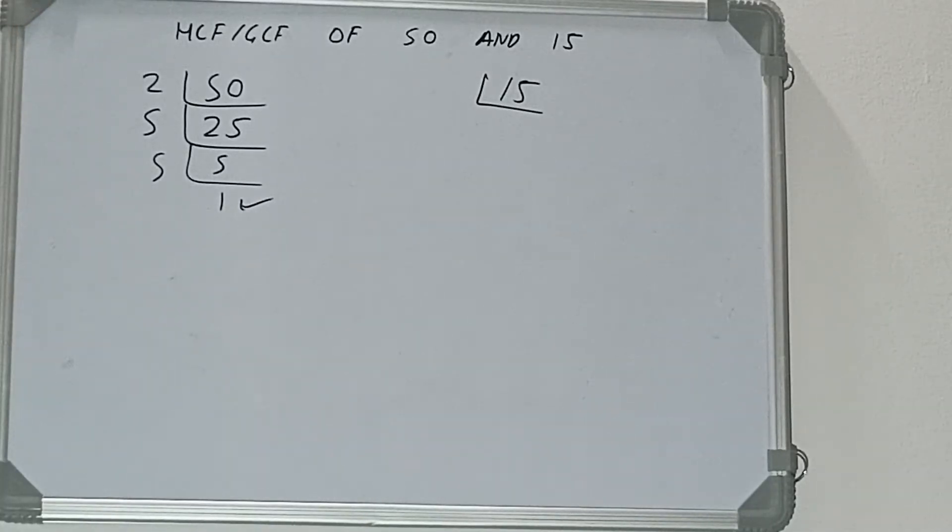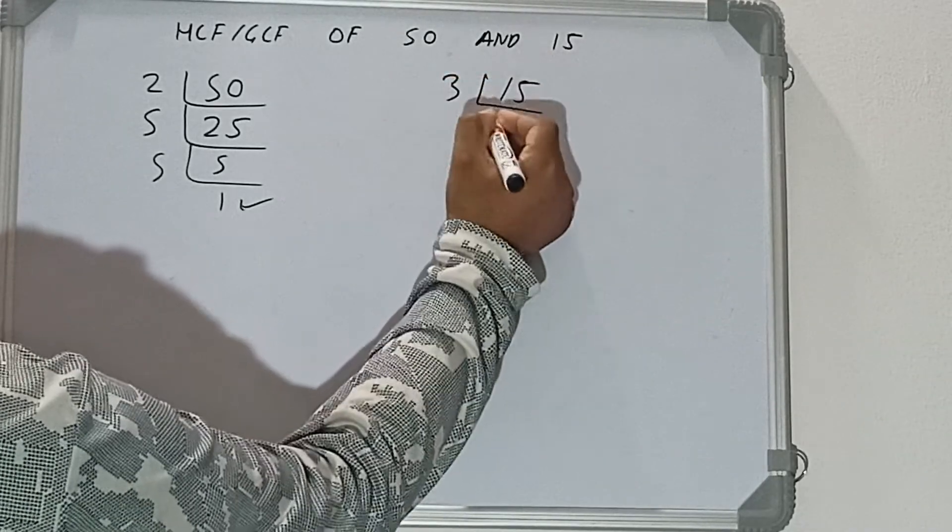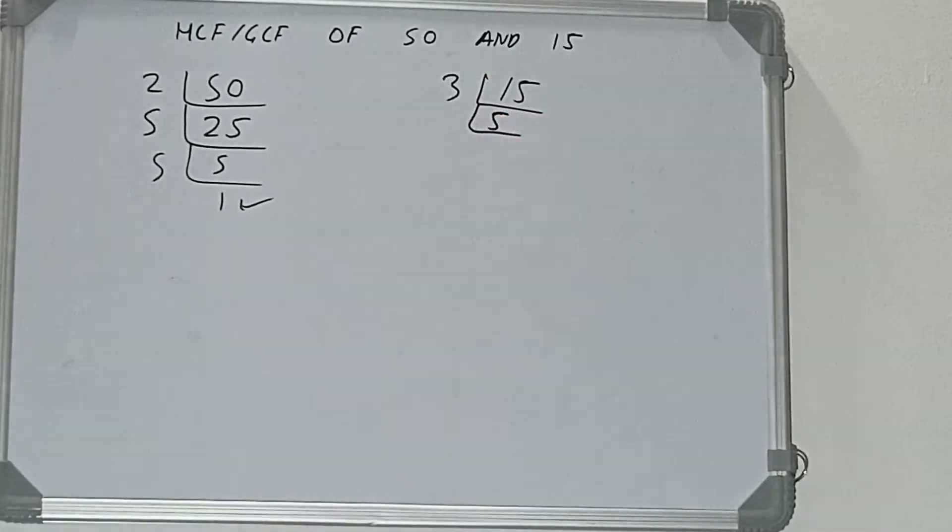Is 15 divisible by the lowest prime number 2? No it is not. We'll check with the next lowest prime number, which is 3. Is 15 divisible by 3? Yes it is, and we'll have 5. 5 is not further divisible by 3.